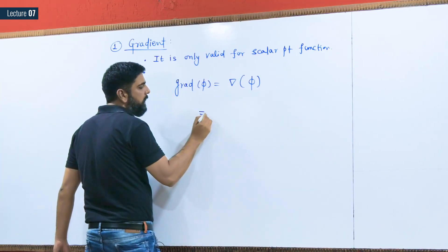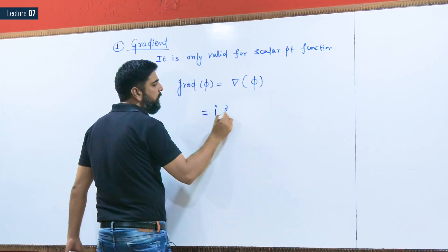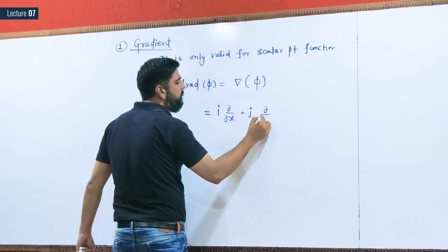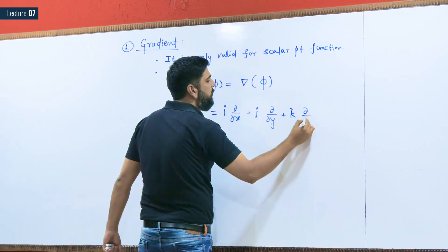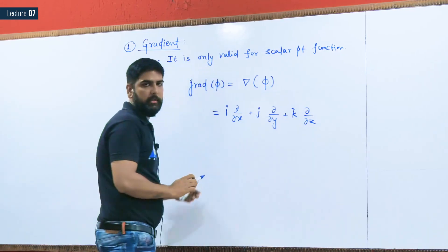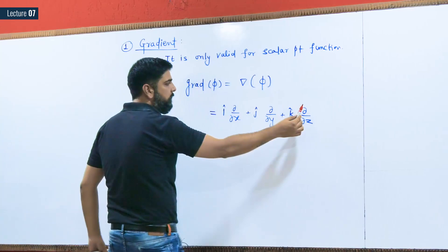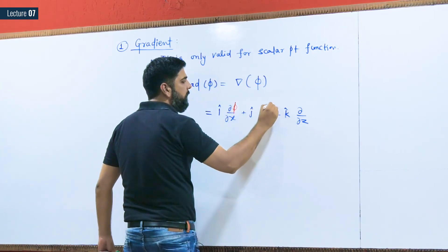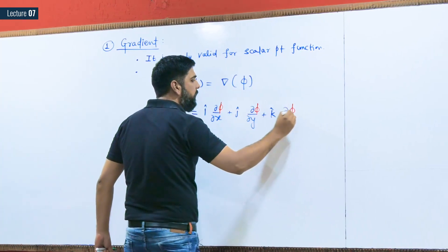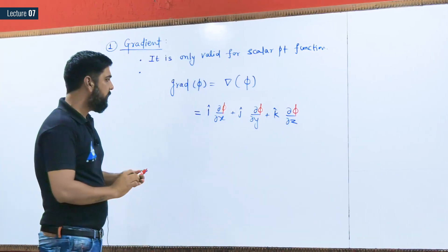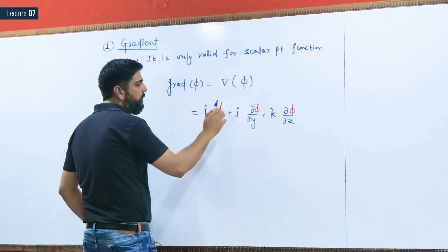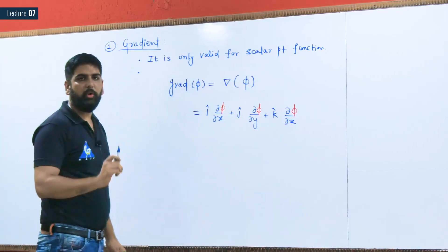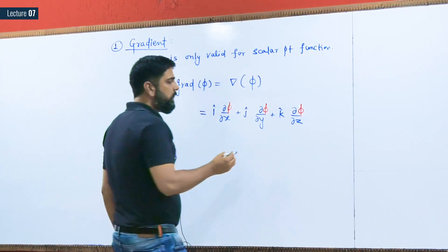The del operator is nothing but î(∂/∂x) + ĵ(∂/∂y) + k̂(∂/∂z), and we apply phi inside. So the gradient of phi equals î(∂φ/∂x) + ĵ(∂φ/∂y) + k̂(∂φ/∂z). This is the gradient, and you can see it has components î, ĵ, and k̂.